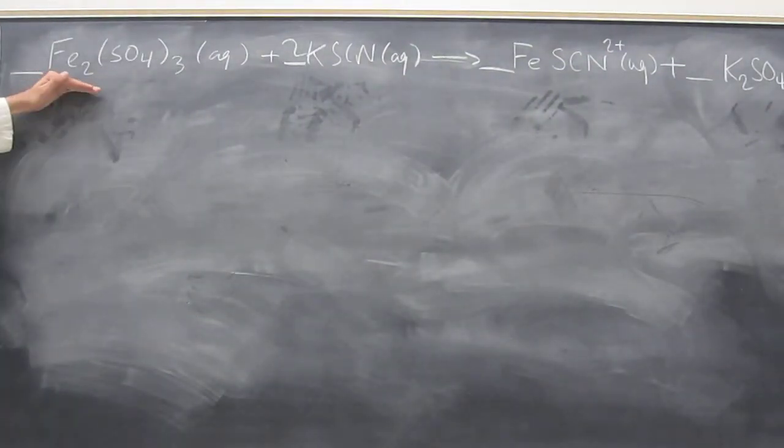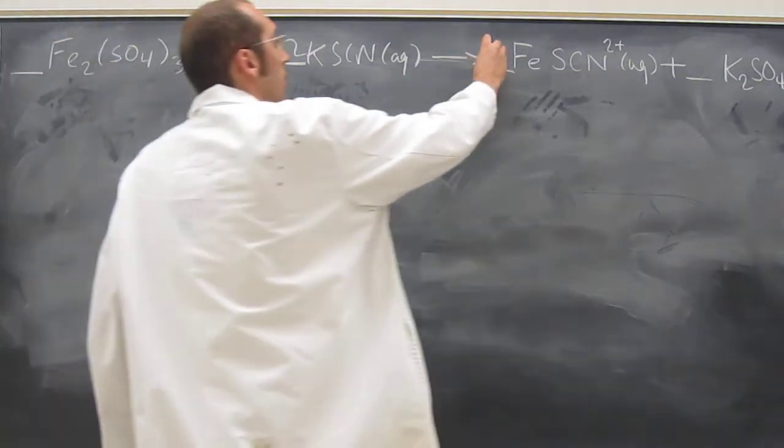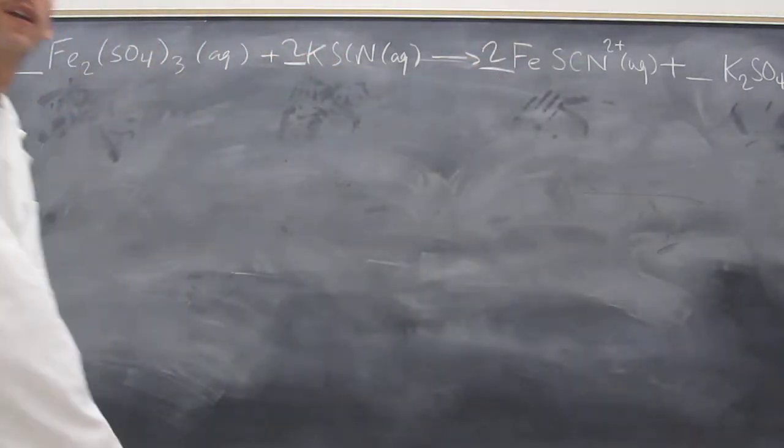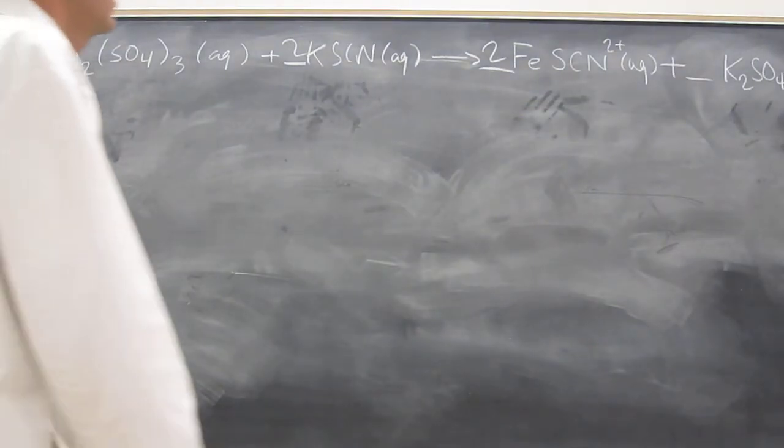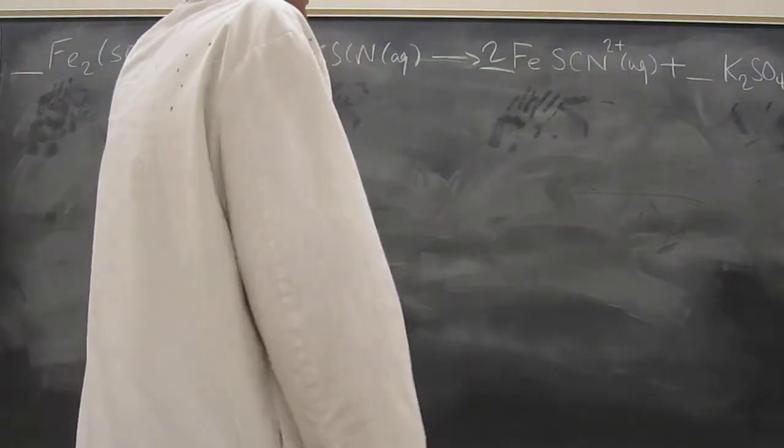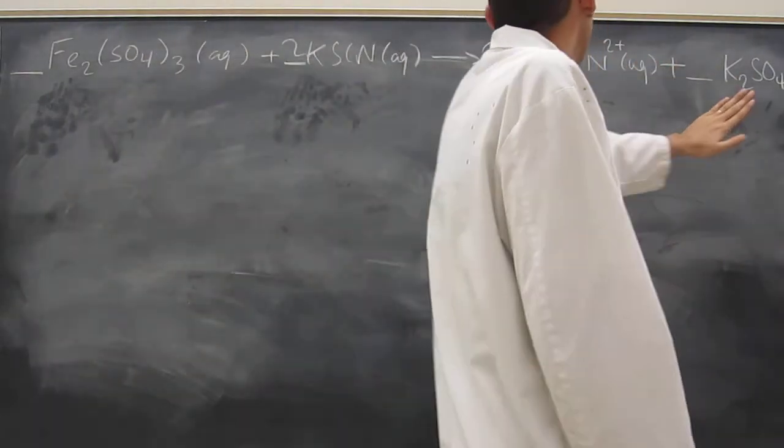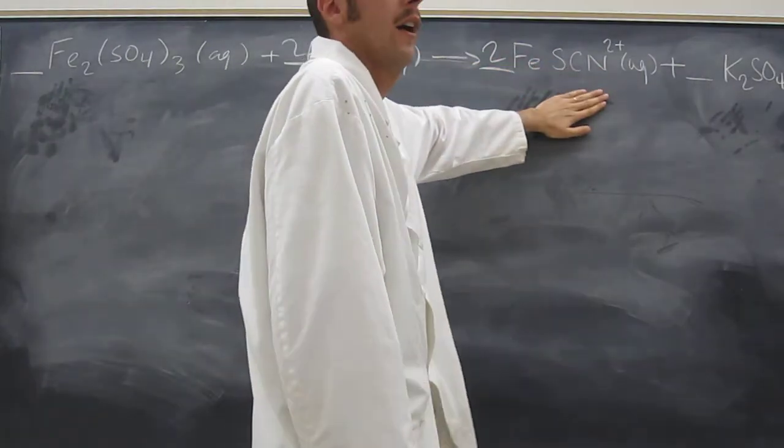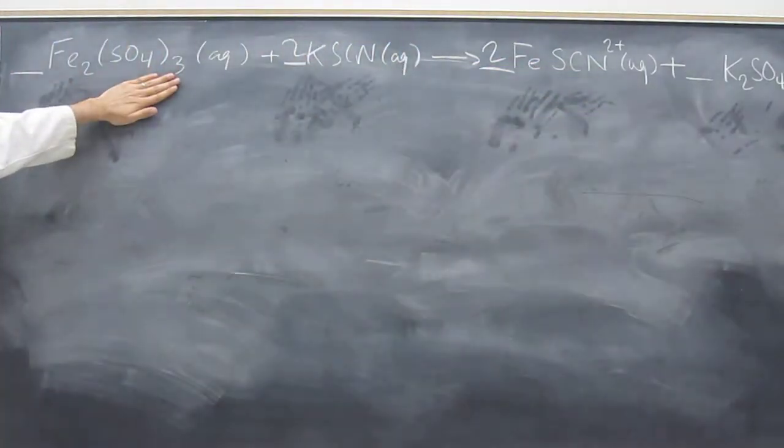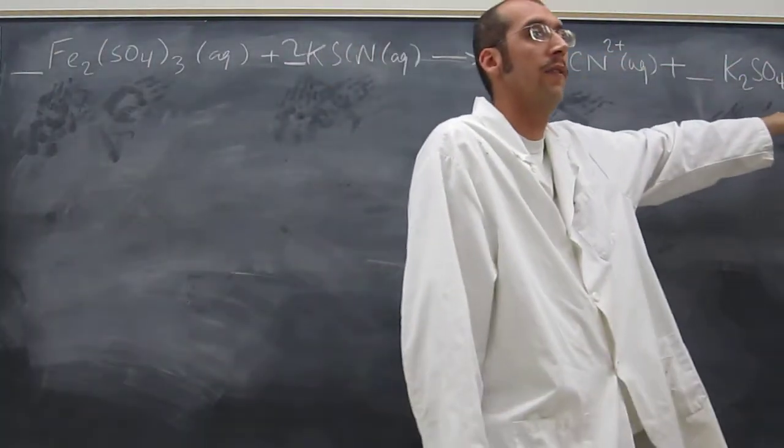So iron here, there's two of them. So we can put two there. Is everybody okay with that? So now we've got two irons, two irons, two potassiums, two potassiums, two thiocyanates, two thiocyanates, three sulfates, one sulfate.